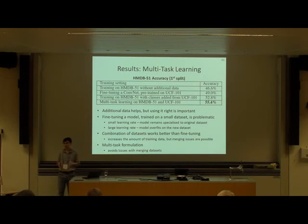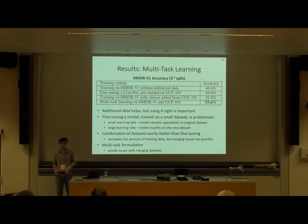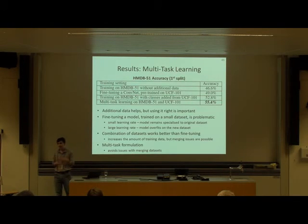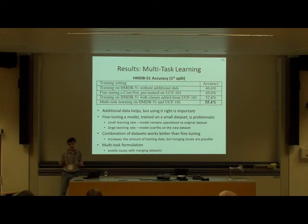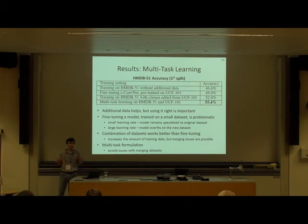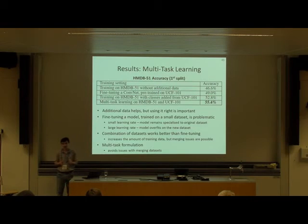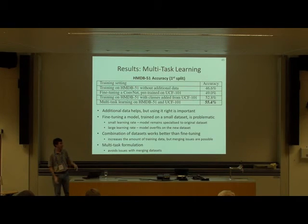One way to combine datasets is to simply merge them into one. But if you merge different datasets, you have the problem of semantic overlap between classes — for instance, if one dataset has a class 'jump' and another has 'high jump', it's not clear how to merge them. In our experiment we merged UCF and HMDB by taking only the classes with a clear match. But if you use multitask learning, you don't have to deal with this problem since you have separate loss functions for each dataset. The multitask approach gives about 9% improvement compared to training from scratch.